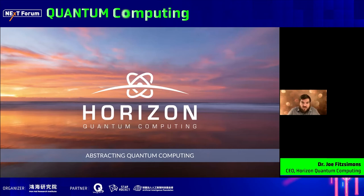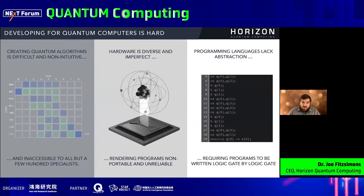One of the reasons we care about this is because it's really hard to develop applications for quantum computers. There are a number of barriers to achieving this. First of all, quantum computing is extremely non-intuitive. It relies on interference between different branches of a wave function, different branches of computation, in a way that we don't really have day-to-day experience with as humans. So it really is outside the realm of our experience to try to construct quantum algorithms, and it takes an awful lot of effort and experience before we're able to make decent progress there.